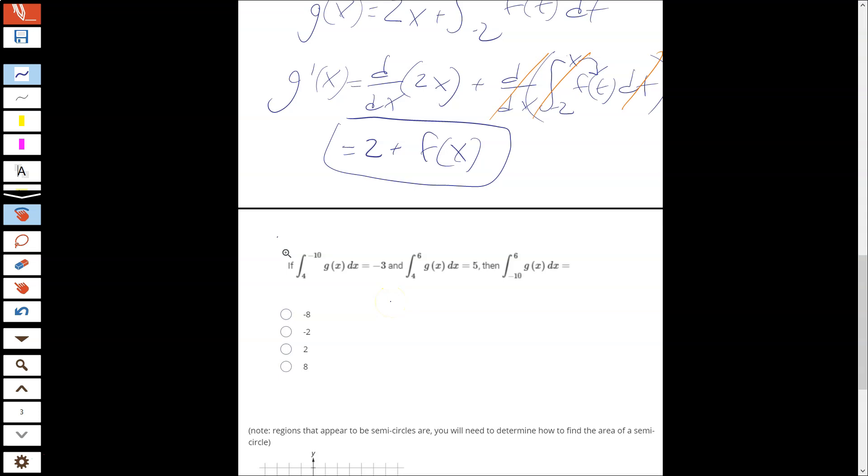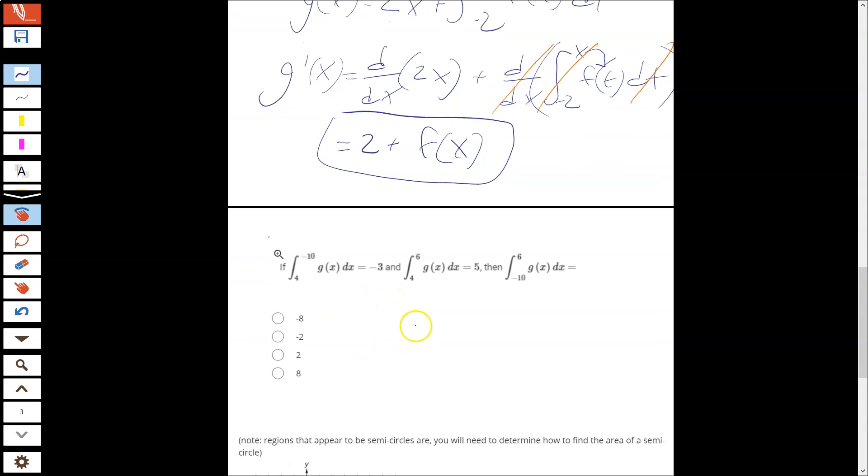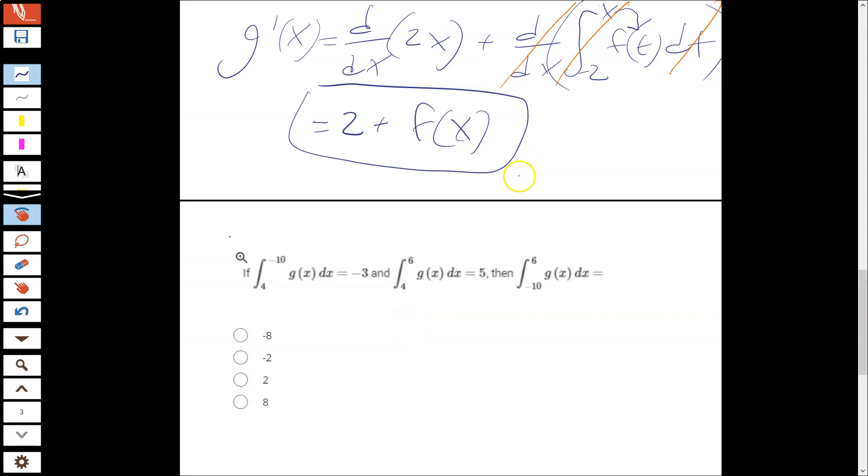And here we are testing whether you know about the additive properties of these. This one is pretty easy. We just have to make sure we get things in the right order. Okay, so we have from 4 to negative 10 is our first integral. So notice that is the wrong way around from how we like to see it. We're going to rewrite that right away. So we want the integral from negative 10 to 4 of g(x)dx would be equal to, if this is a negative 3, a positive 3.